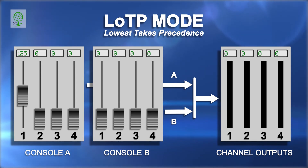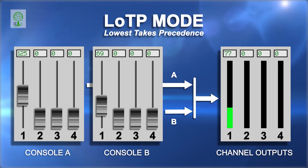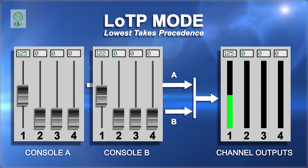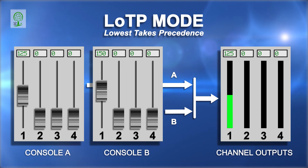then the output is 0. If input B, channel 1, then increases to a level of 150, then the output will increase from 0 to 125, and holds at the lowest value.